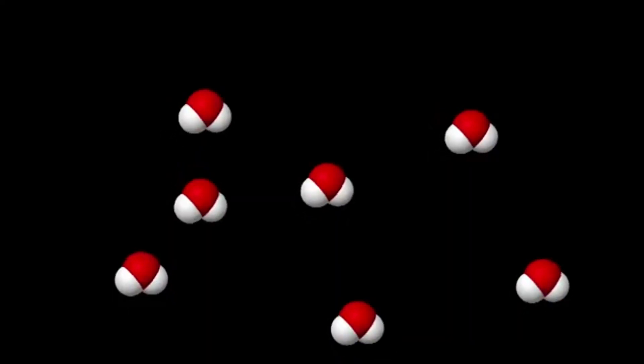In liquid water, they are loosely packed together so they can move past one another. In ice, they are tightly packed together and they can't change places.